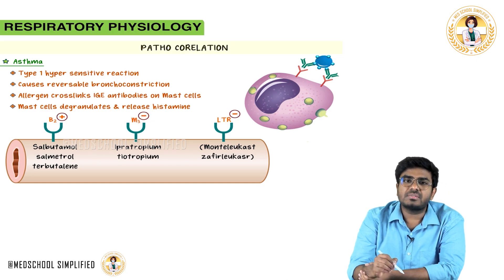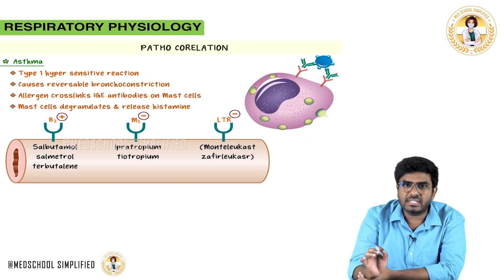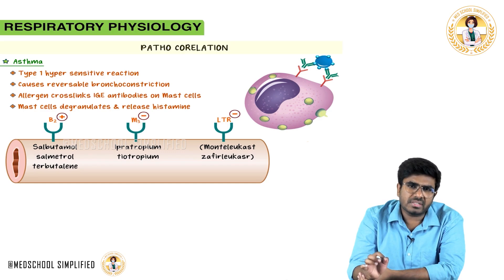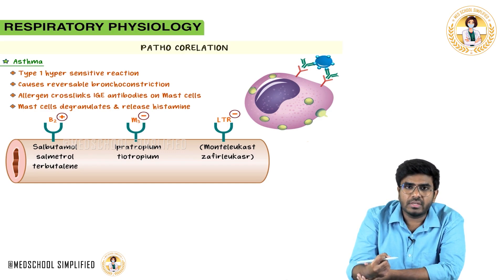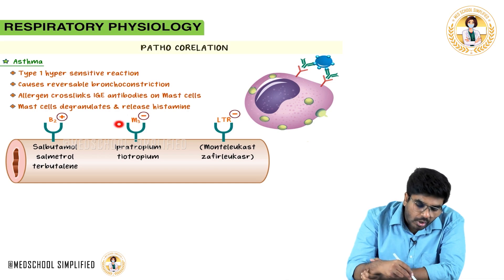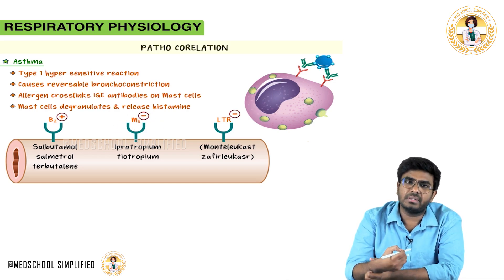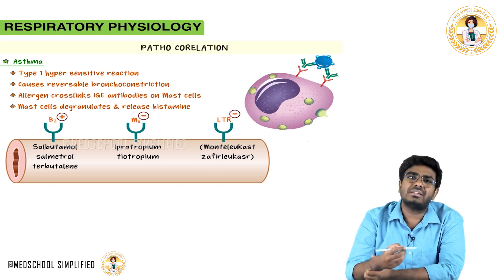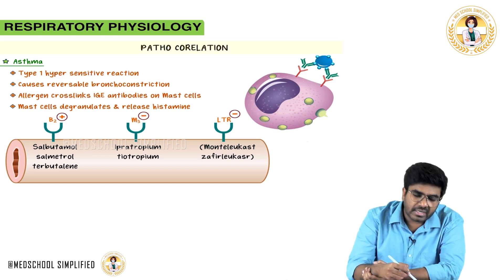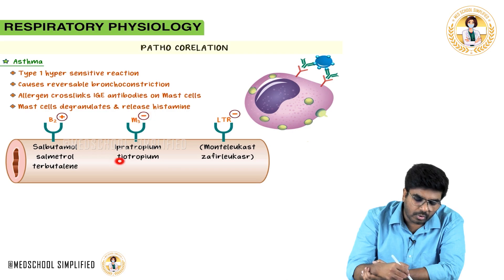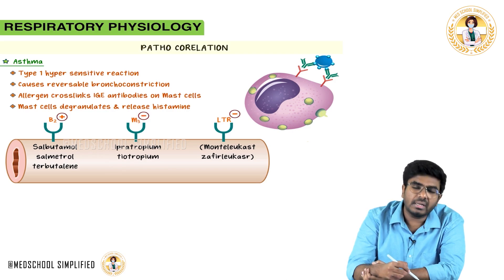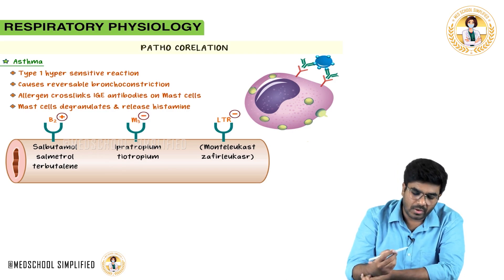The parasympathetic receptor on the bronchus is the M3 muscarinic receptor. If you stimulate it, bronchoconstriction occurs, so we must block it. M3 muscarinic receptor blockers — ipratropium and tiotropium — cause bronchodilation by blocking this receptor.